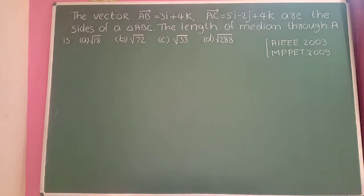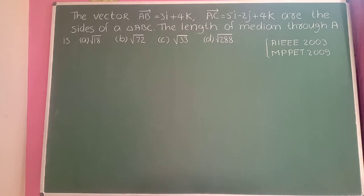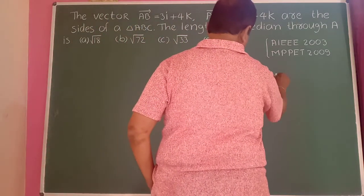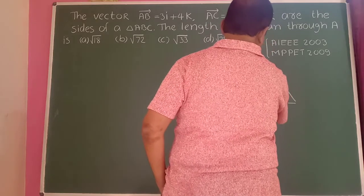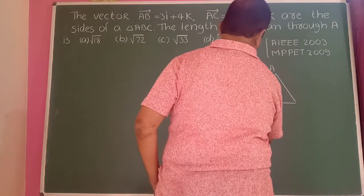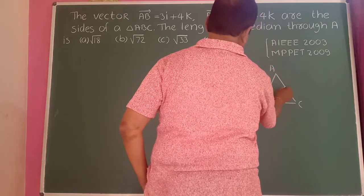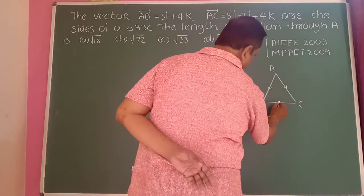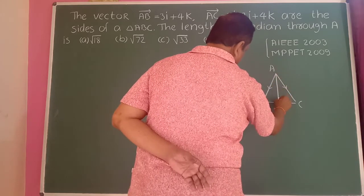Vector AB equals 3i plus 4k, and vector AC equals 5i minus 2j plus 4k are sides of triangle ABC. The length of the median through A is what? In a triangle, the median through A passes through the midpoint D of BC.